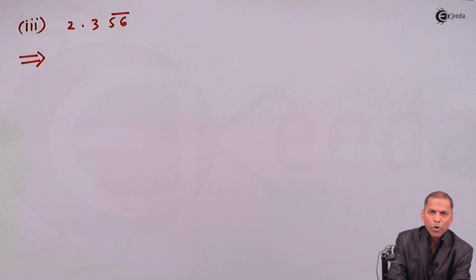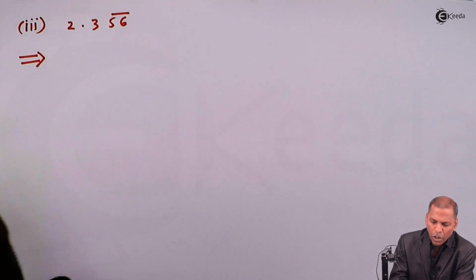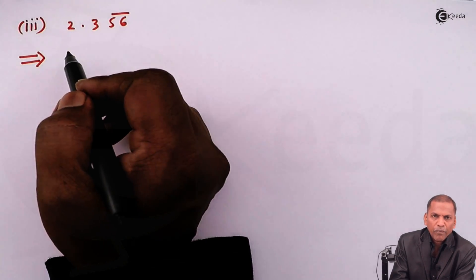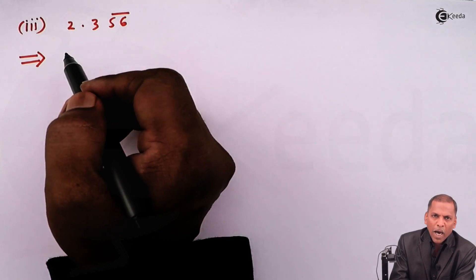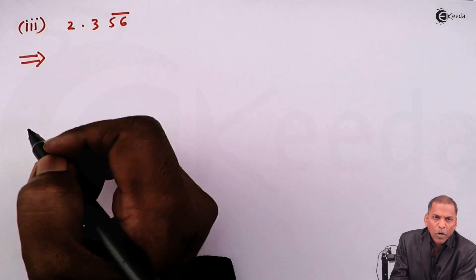Hello friends, now we see problem number 2 sub question 3, which is based on sum to infinity of a GP of chapter sequence and series. The problem number 2 sub question 3 is 2.356 bar. Now let's see the solution.